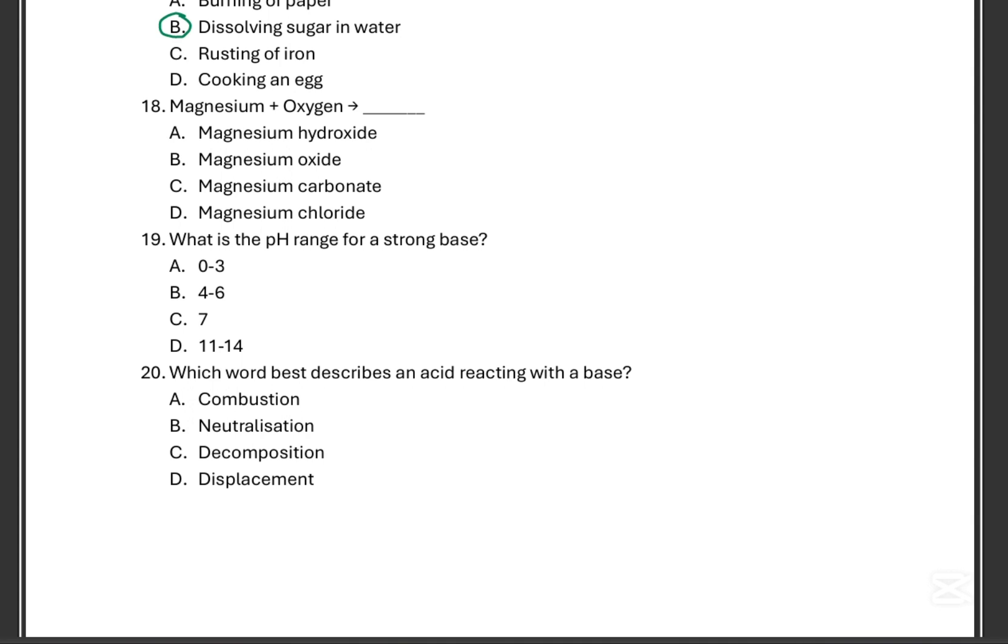Magnesium reacting with oxygen, what is the product? So these two are the reactants. They are asking you about the product. This is easy, that will obviously be B. What is the pH range for a strong base? That is D. Strong base, definitely.